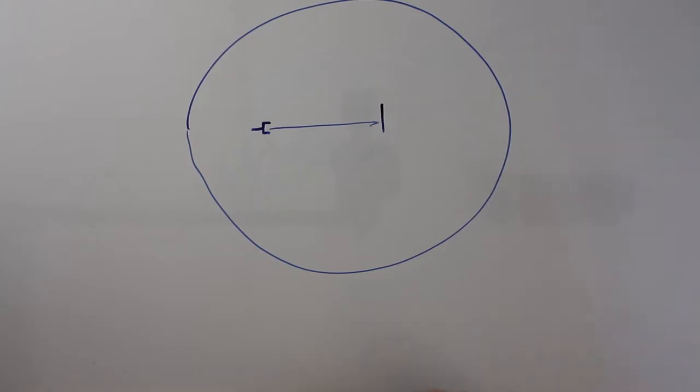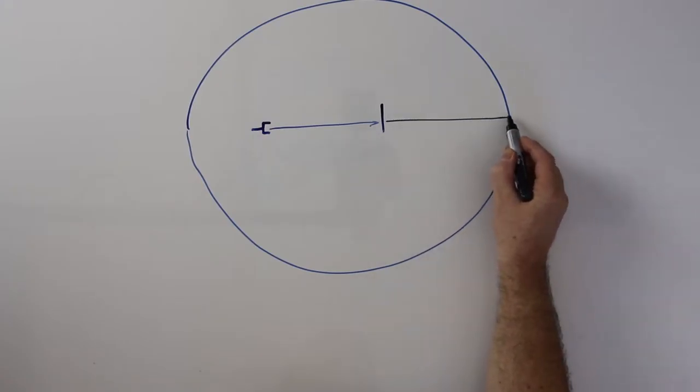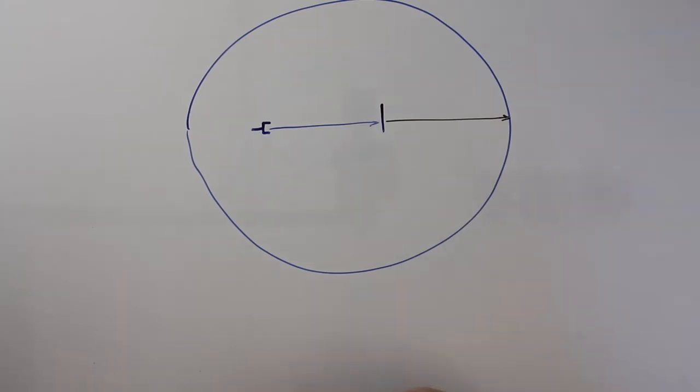Now if the previous plum pudding model had been correct, the particles wouldn't have got any further than this. But what they found, the two students Geiger and Marsden, was that most of the particles went through.